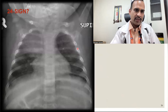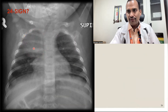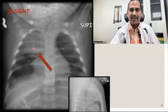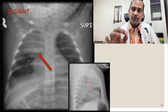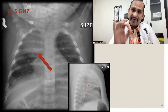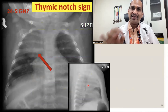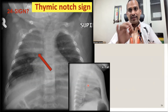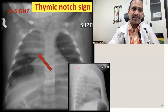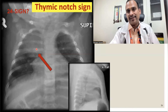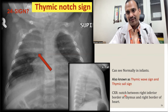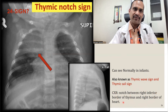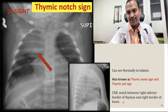Sign 24 is the thymic notch sign. You can see opacity in the upper zone of the right lung; on lateral X-ray, there is opacity in the upper lobe. If you find this type of X-ray in an infant less than 1 year of age, this is normal — it is normal thymus. It is also called the thymic wave sign or thymic sail sign. The notch is found between the right inferior border of the thymus and the right border of the heart.